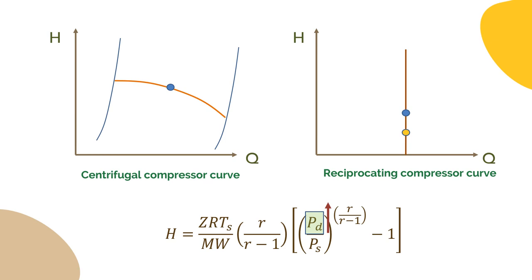As the compressor curve depends on many factors, it's always important to provide the compressor manufacturer with the applicable scenarios to check them. For this reason and as the API 617 recommends, the supplier provides the curves for both head vs flow rate and discharge pressure vs flow rate.